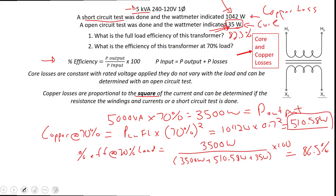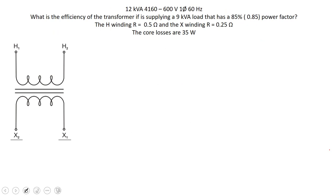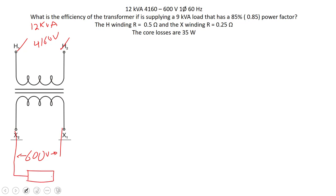Let's try another example. We have a 12kVA transformer with a primary voltage of 4160 volts and a secondary output voltage of 600 volts. There is a load connected of 9kVA at a power factor of 0.85. The H winding has a resistance of 0.5 ohms and the secondary X winding has a resistance of 0.25 ohms.